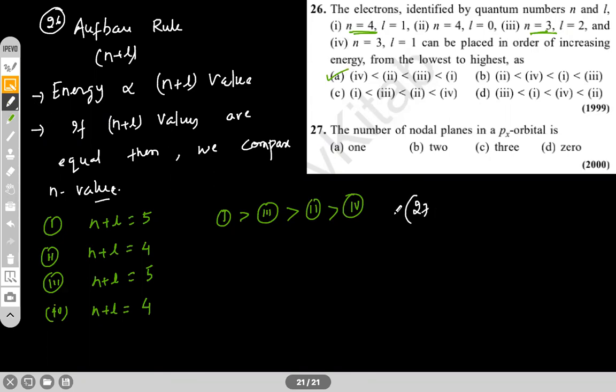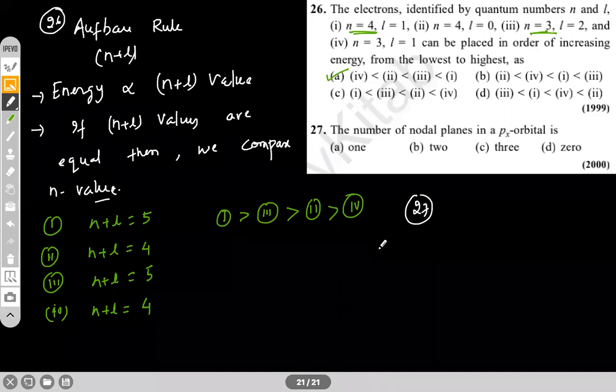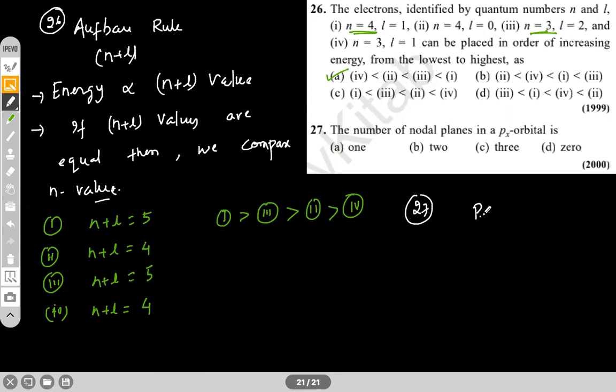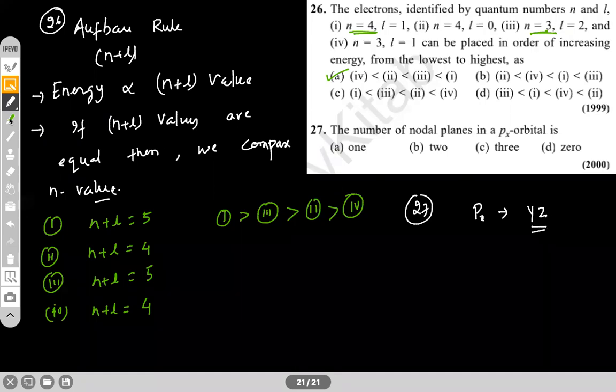Question number 27: the number of nodal planes for PXY. PXY has only one nodal plane, that is the YZ plane. So the answer for this one is option one — that is only one — perpendicular to the X axis, that is the YZ plane.